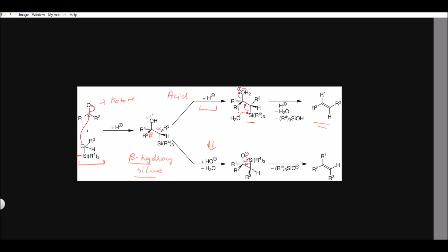Now let's talk about the base condition. When we use a base, it will abstract the most acidic proton, which is the hydrogen attached to the oxygen — the OH proton. The base abstracts this proton and we get O minus. This O minus will bind to the silicon because an oxygen-silicon bond is very stable. The problem is that this silicon and this oxygen are in different planes.